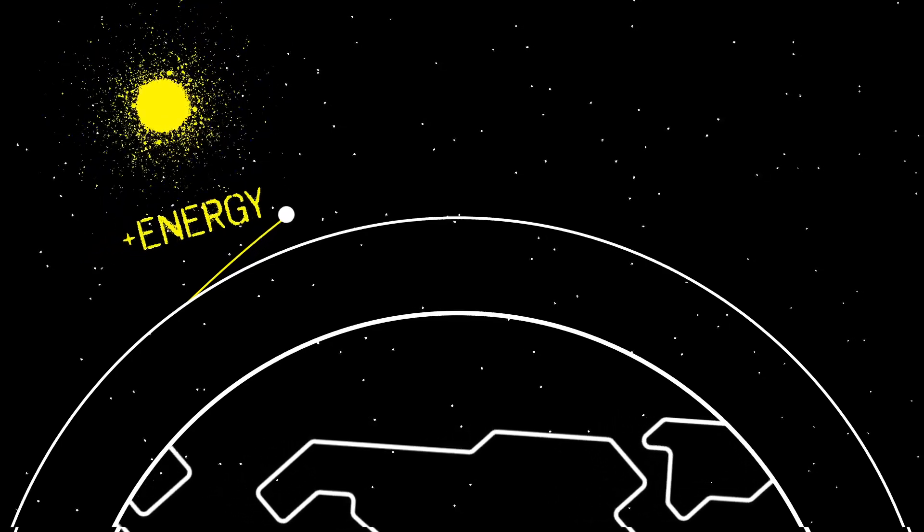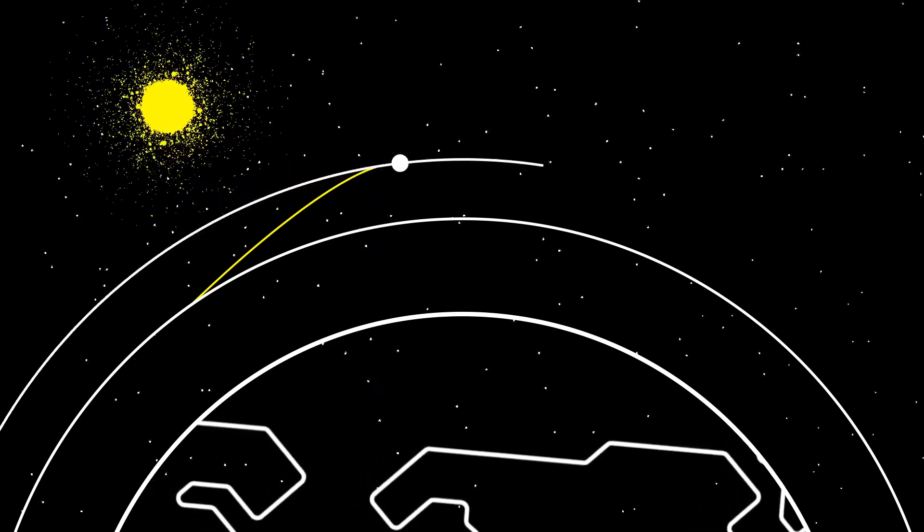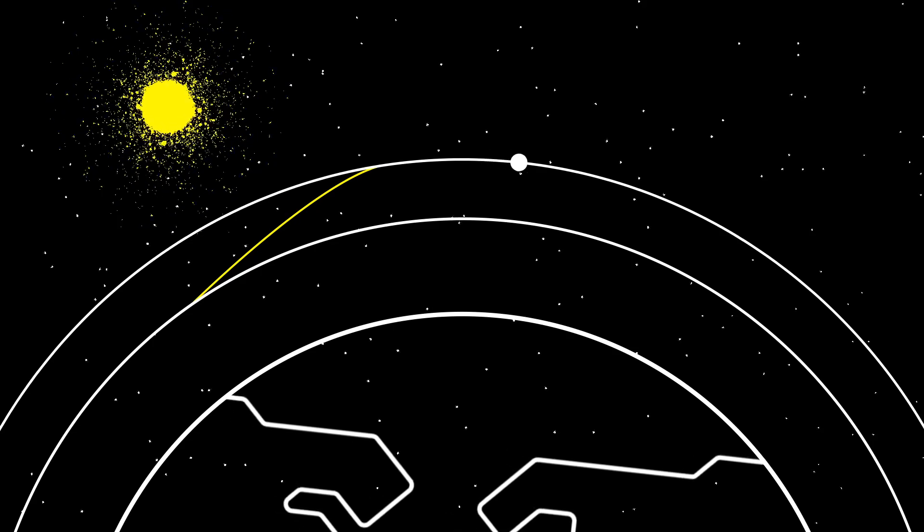Changing orbit in space actually consists of carefully adding and subtracting energy at the right times. Not electrical energy, but rather the satellite's combined kinetic and potential energy. Adding energy raises the orbit farther away from Earth, and subtracting brings you closer.